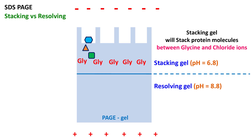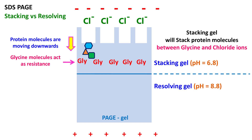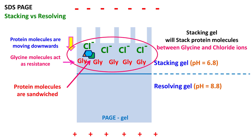Because the glycine molecules in the stacking gel have net zero charge, they remain stationary under the applied electric field. The protein molecules, which have net negative charge due to SDS, try to move from the top to the bottom of the gel. Because the glycine molecules are not moving, they act as a resistance for the proteins. The chloride ions also have a negative charge and are trying to move from top to bottom, continuously pushing the protein molecules from behind. Hence, the protein molecules are sandwiched between glycine and chloride ions. This phenomenon is known as stacking of protein in the stacking gel.